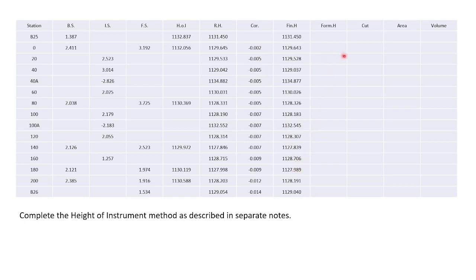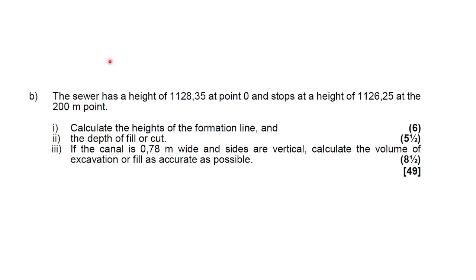I've already put in the columns for our formation heights, our cut/fill, our area and our volumes. The second part of the question is the sewer has a height of 1,128.35 at chainage 0 and stops at a height of 1,126.25 at the 200 metre point.